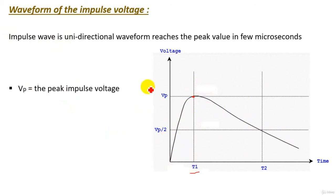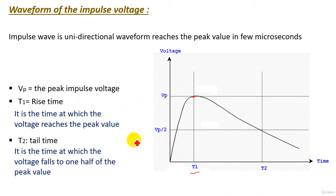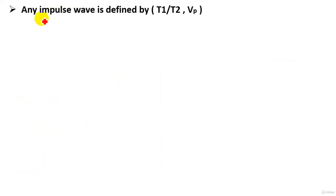The key parameters are: Vp, which is the peak impulse voltage; t1, the rise time — the time at which the voltage reaches the peak; and t2, the tail time — the time at which the voltage falls to one half of the peak value. Any impulse waveform is defined by t1/t2 and Vp.